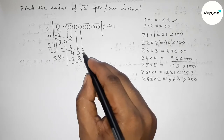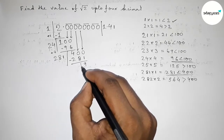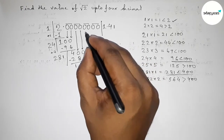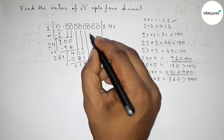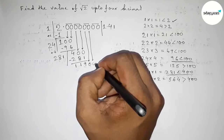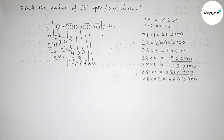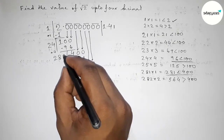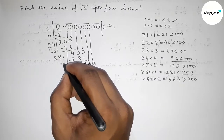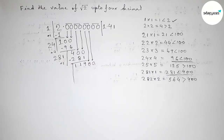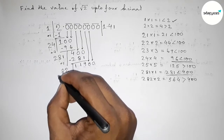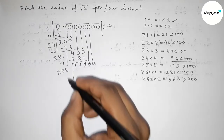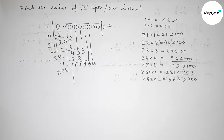Subtracting 281 from 400 gives 119. Now write down the next pair of zeros, giving 11900. Draw a division line. The last digit of the current divisor is 1, so adding 1: 281+1=282. We now have to put a number beside 282.